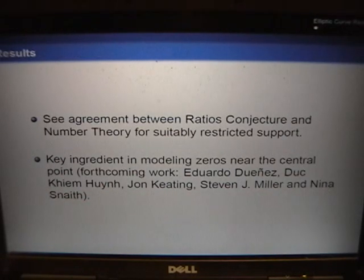In our paper, we looked at families of quadratic twists of elliptic curves and calculated the ratios conjecture's prediction and number theory. After doing some combinatorics, we were able to show that for suitably restricted test functions, the two are in agreement.